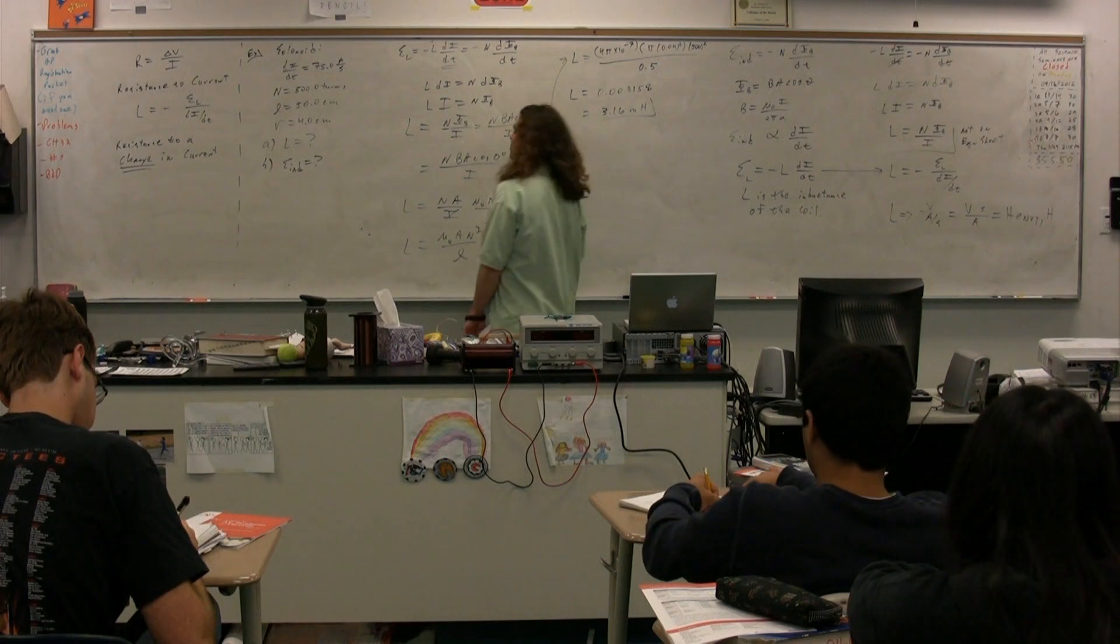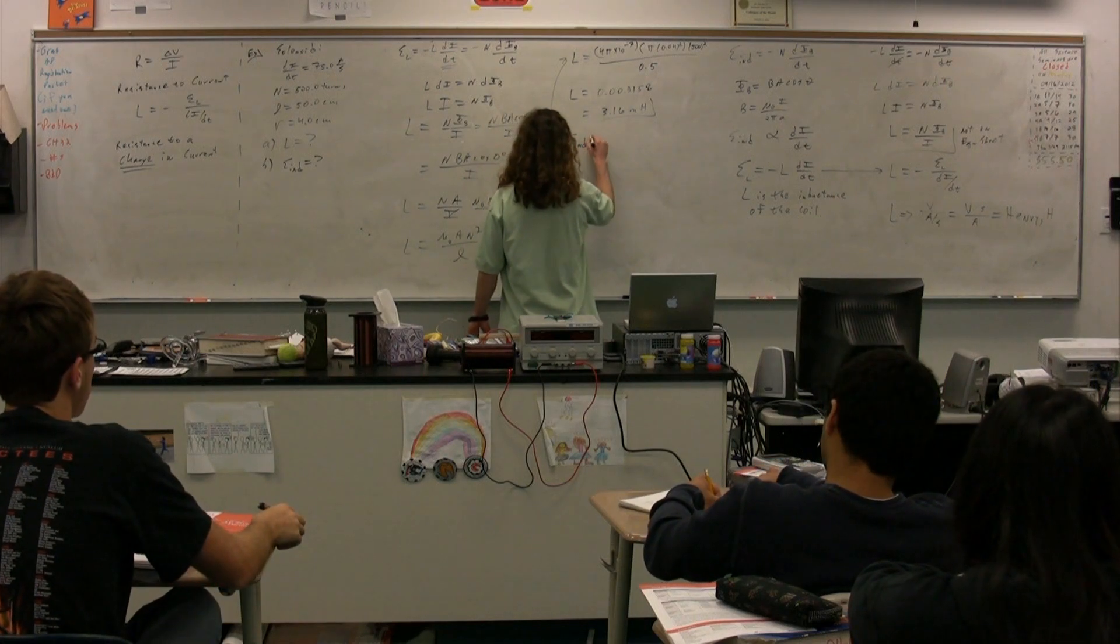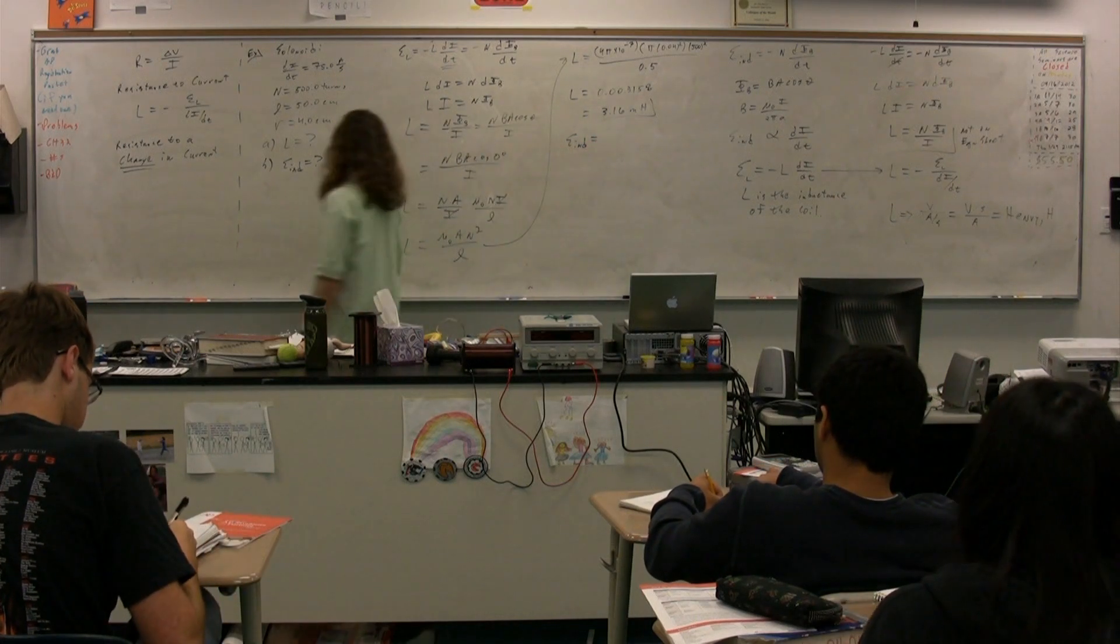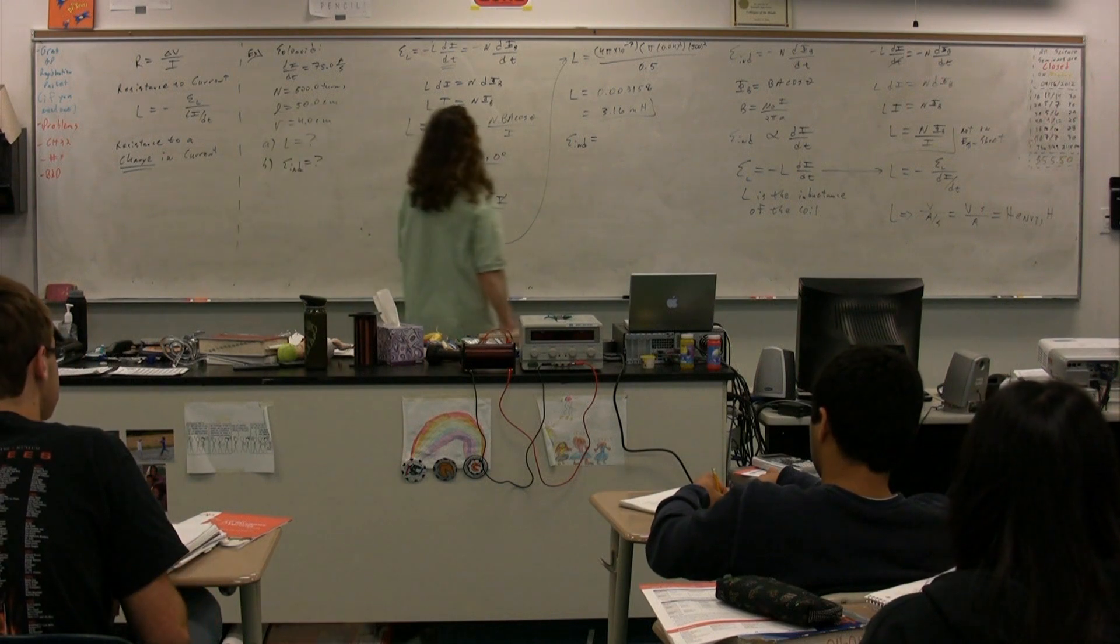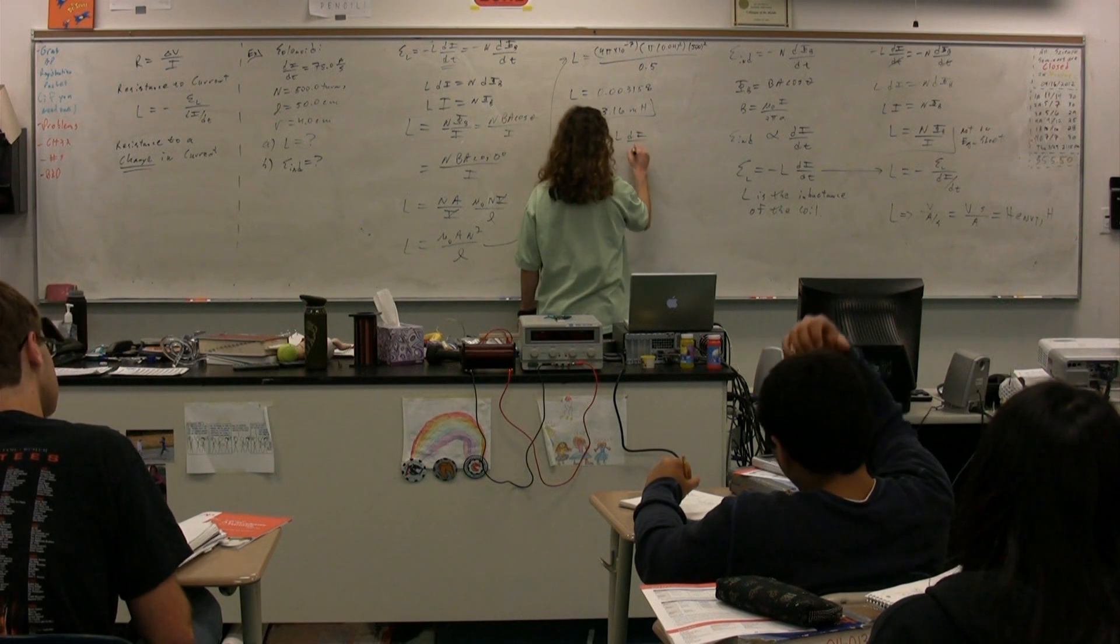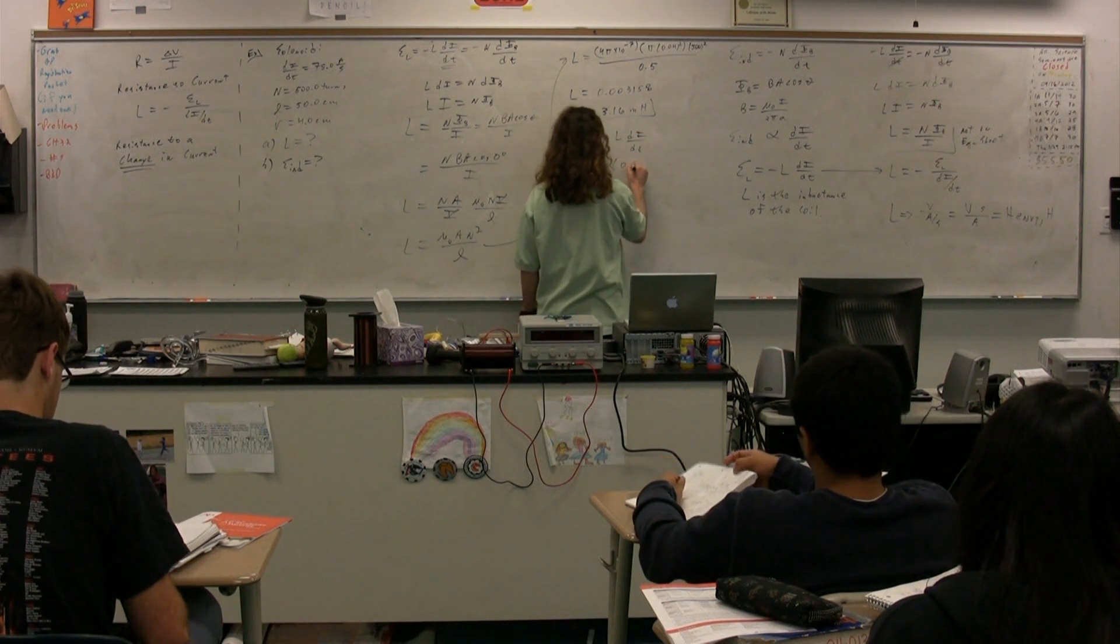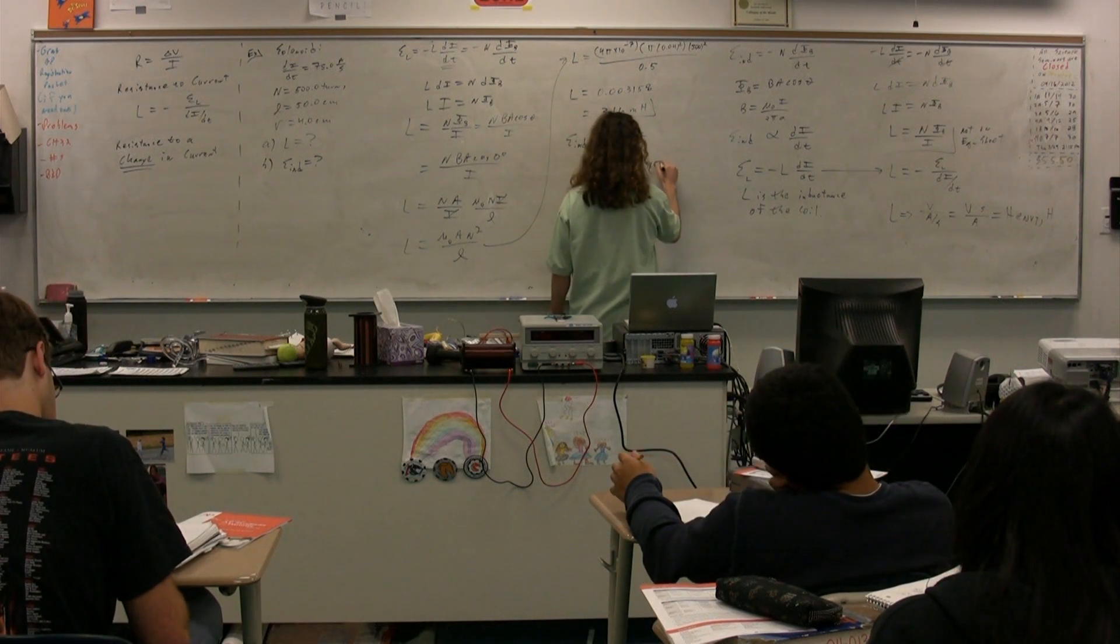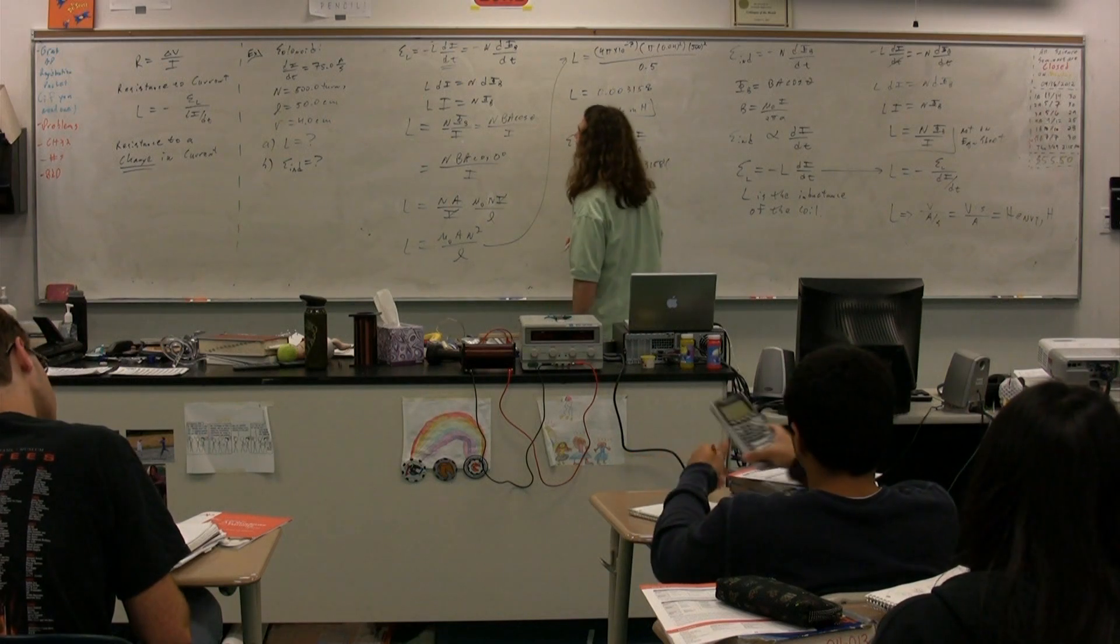So now, part B, I want to know the induced EMF. Induced EMF, well, we now have the number of Henry's. We have di dt, so it's just negative L di dt, or negative 0.003158 multiplied by di dt, which was 75.